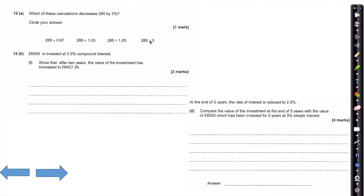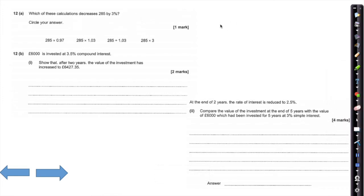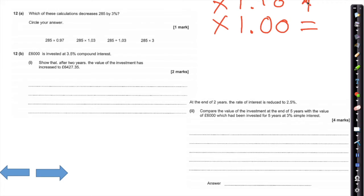Question 12 is about multiplier knowledge. If you multiply by 1, something stays the same. If you multiply by more than 1 — say 1.10 — it increases. If you multiply by something less than 1 — say 0.90 — it decreases. As a percentage, 0.10 is 10%. So to increase by 10%, times by 1.1. To decrease by 10%, times by 0.90.